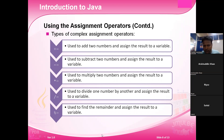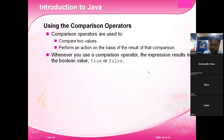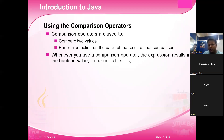Comparison operator is used for comparing two values. A equals equals is used for comparing two values.